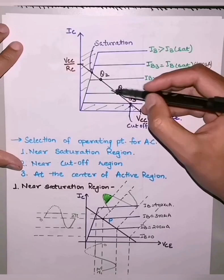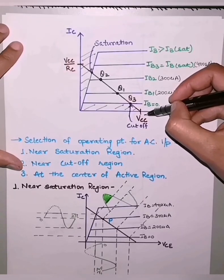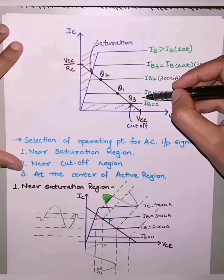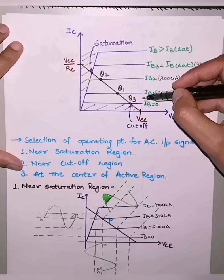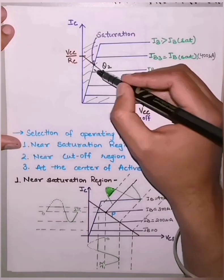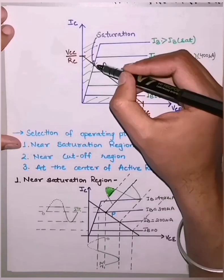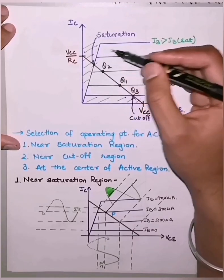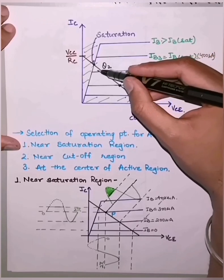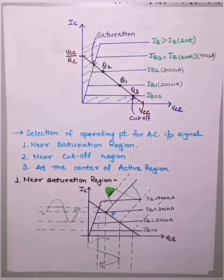The DC load line is a straight line drawn on the characteristics curve between two points: point A on the IC axis and point B on the VCE axis. It is used to fix the operating point of a transistor, called the Q point or quiescent point. The Q point's position is critical — if it is below the cutoff point the transistor is in cutoff (OFF), and if it is above the saturation point the transistor is in saturation (ON). For the transistor to work as an amplifier, the Q point must lie between the saturation and cutoff points.